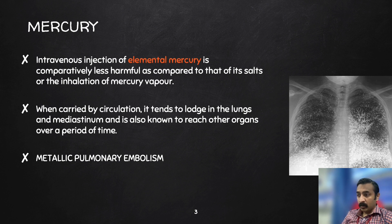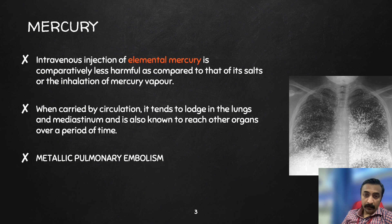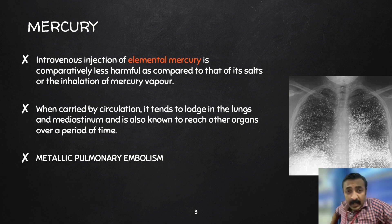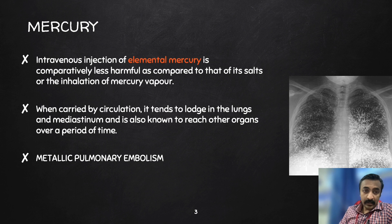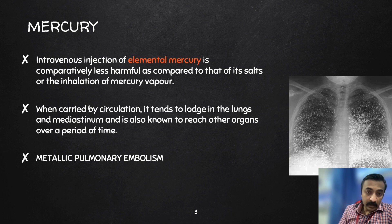We also had a patient who had a similar picture on X-ray during the initial days, but over years this appearance had almost completely disappeared. Remember that when carried by circulation, elemental mercury tends to lodge in the lungs and mediastinum and is also known to reach other organs over a period of time. This is an X-ray of metallic pulmonary embolism due to injection of elemental mercury.